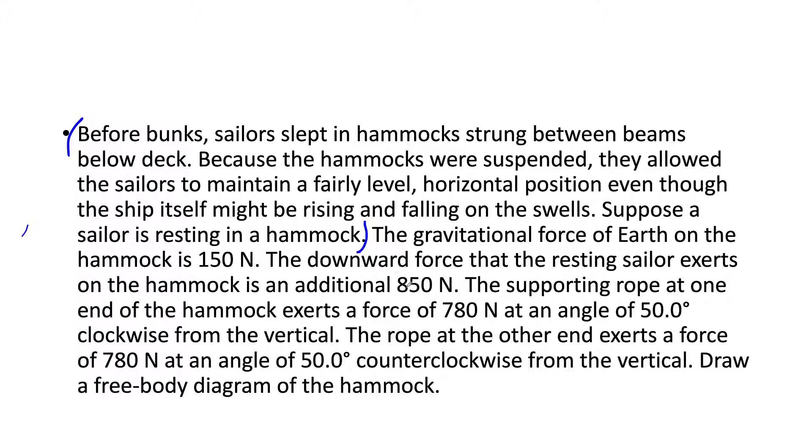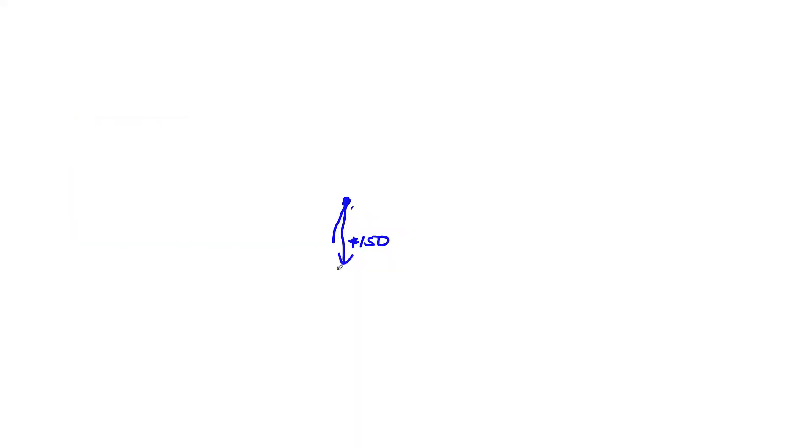And now the sailor also exerts another 850 newtons. So on top of that we've got another 850 newtons. So we've got two forces going down. And you could add them like this or you could just draw one arrow for 1000 newtons, because 150 plus 850 that's going to be a thousand.